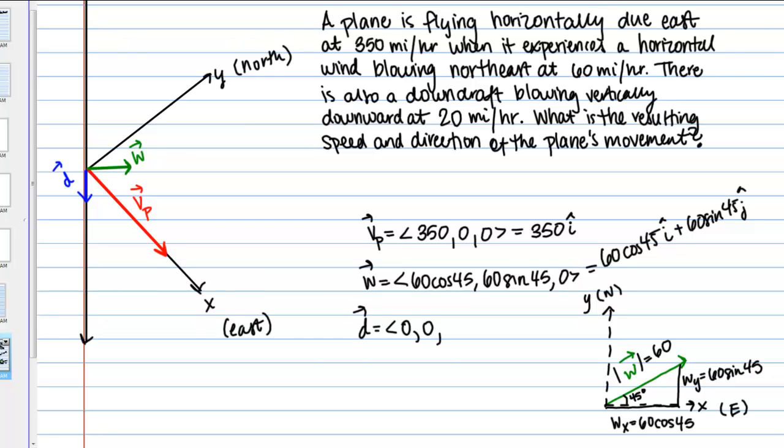So then vector D has no X or Y component. So 0, 0. And then the magnitude of this vector is 20. But it's in the negative Z direction. So I'm going to write that negative 20. If I wanted to write that in terms of my coordinate unit vectors, it would be negative 20 K.